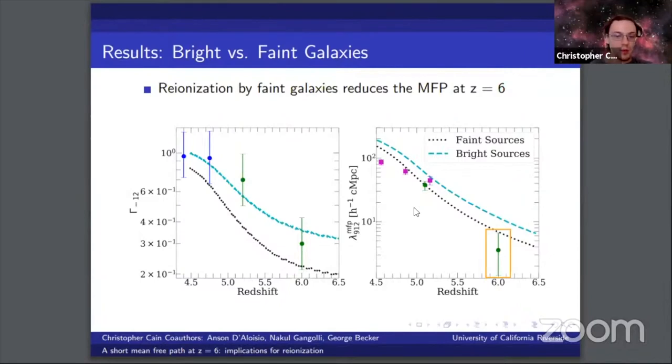This is for two reasons. One is that the less clustered sources result in smaller photoionization rates on average, which you can see in the left panel here. And at redshift 6, when there's a significant amount of neutral gas in the IGM, the typical ionized bubble size is also smaller in the faint sources model, and this further reduces the mean free path at redshift 6.